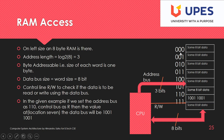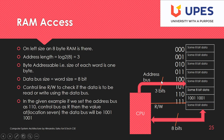This memory is byte-addressable, meaning each cell size is 8 bits. The data bus size will be the word size, that is 8 bits. There is one control line for read/write. The address bus is 3 bits. A thick line with a cross marker represents a multi-bit bus, and the number represents the size.